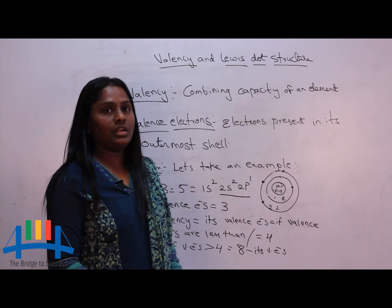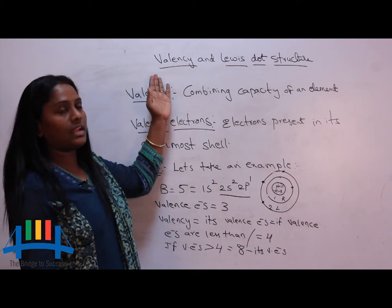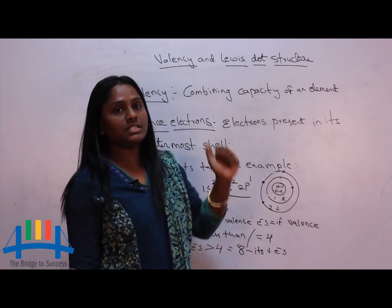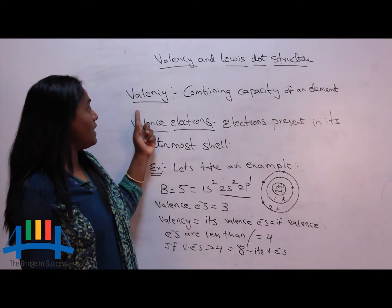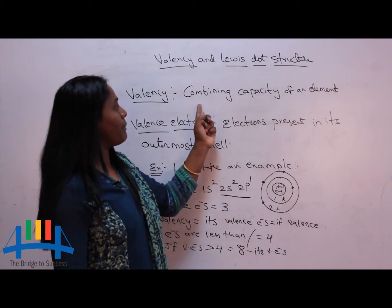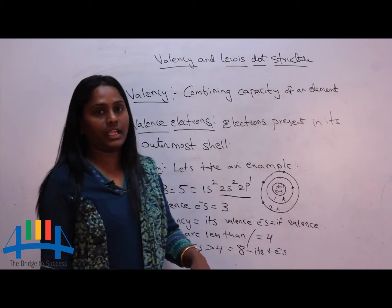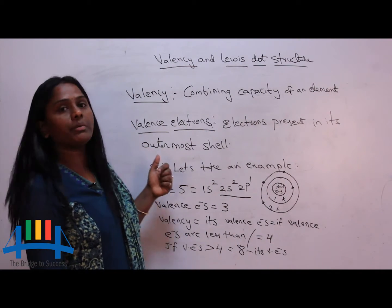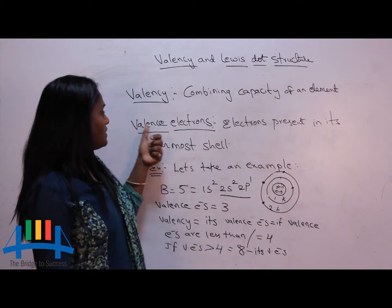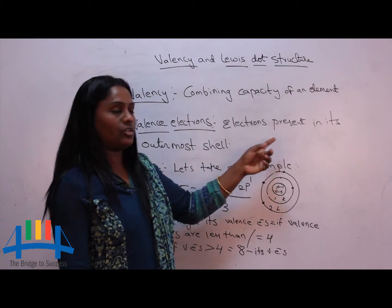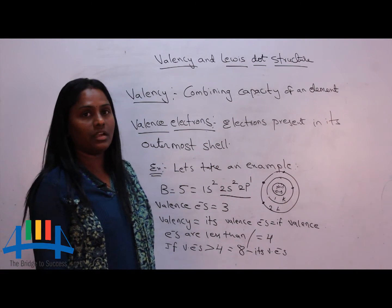Hello everyone, today we will learn about valency and Lewis dot structure. Valency means combining capacity of an element. In this we should know about valence electrons. Valence electrons means electrons that are present in the outermost shell.